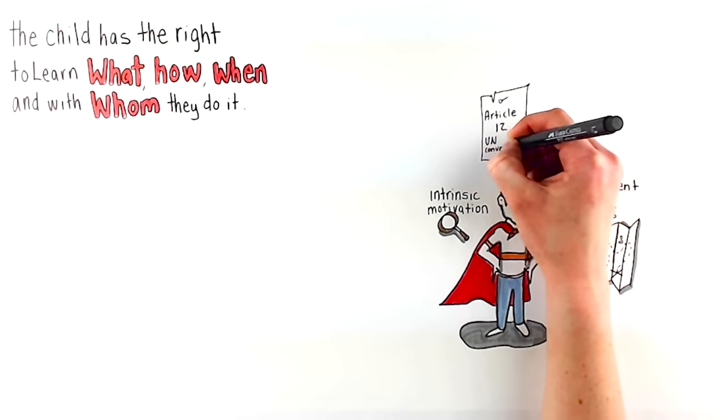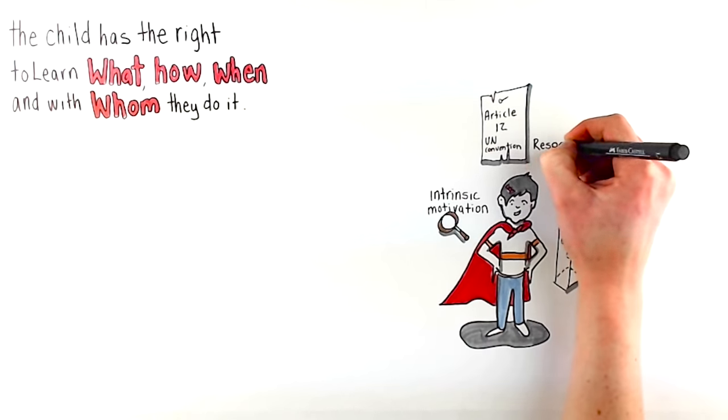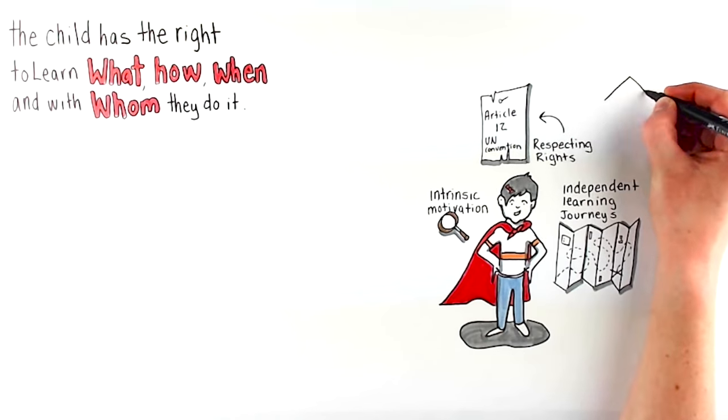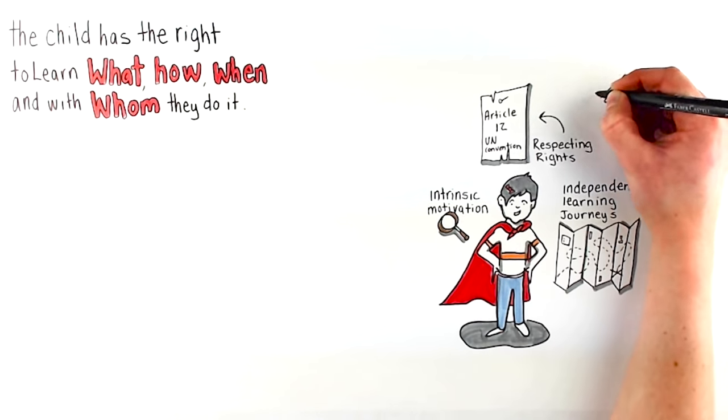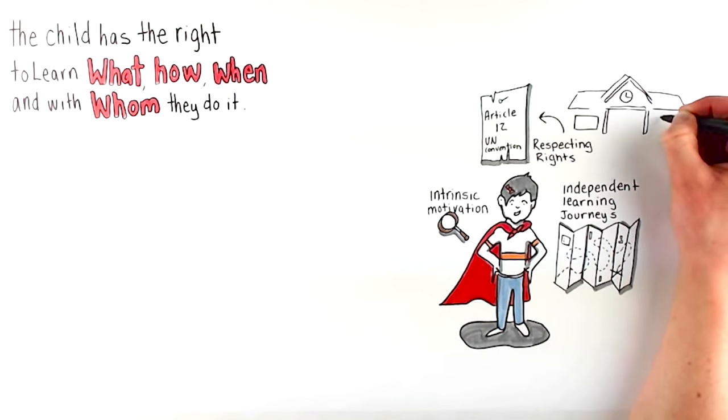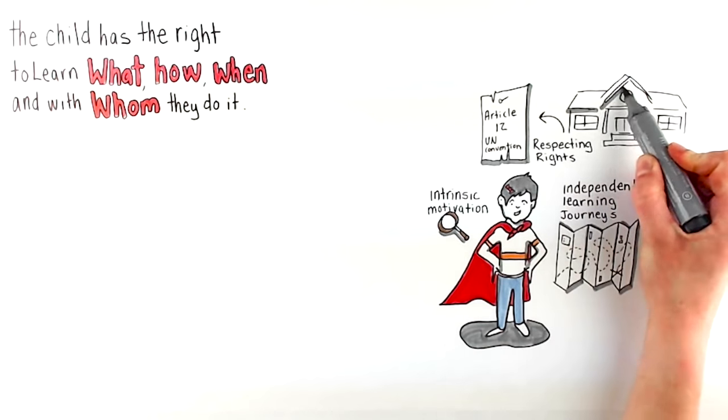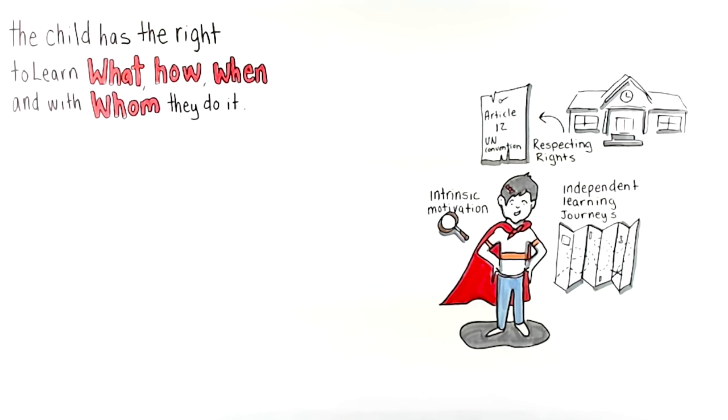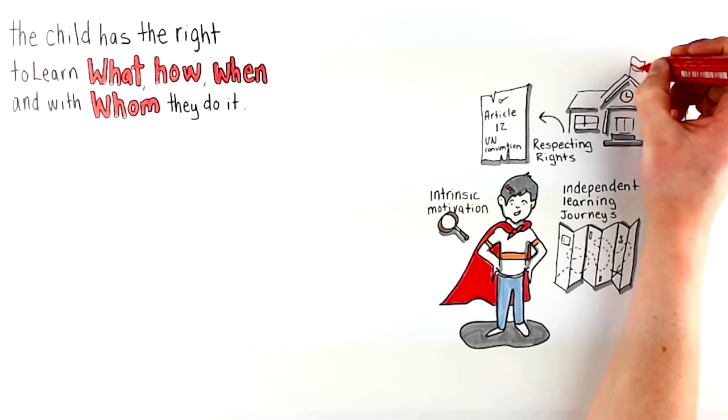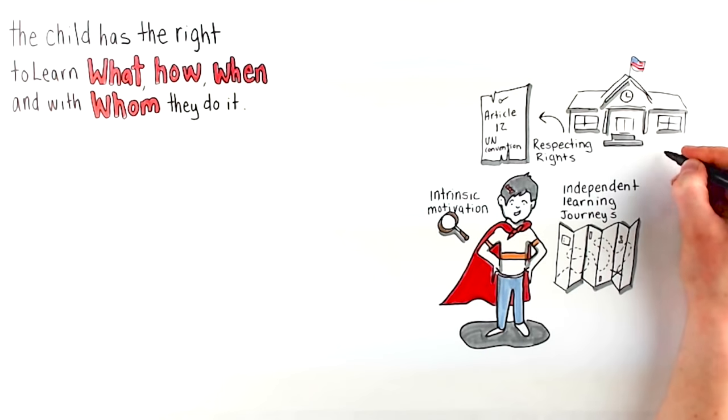Democratic education is about respecting rights. Many people don't realize that Article 12 of the UN Convention on the Rights of the Child states that children have a right to have a say and be heard on matters which affect them. How many schools really allow that?